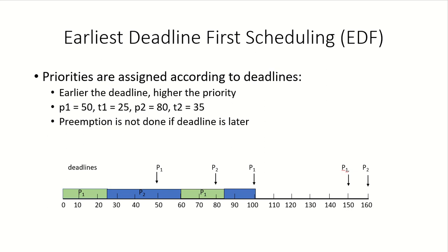In this video, we will see the earliest deadline first scheduling algorithm for real-time processes. These real-time processes arrive at regular intervals in the system, so they are periodic in nature. They require the CPU for some time, and we assume they require the CPU for the same amount of time every time they enter the system. In this algorithm, the priority of a process is assigned according to its deadline.